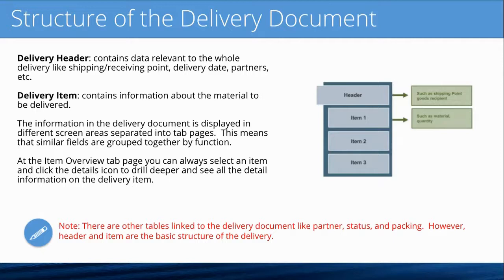Then you have the delivery item level, which has a one-to-many relationship with the header. You can have up to 9,999 items in a delivery — the item number is a five-digit field. The delivery item contains information about the material to be delivered. Information in the delivery document is displayed in different screens separated into tabs, where similar fields are grouped together by function. For example, there's a reference documents tab, an item overview tab, and a shipping tab.